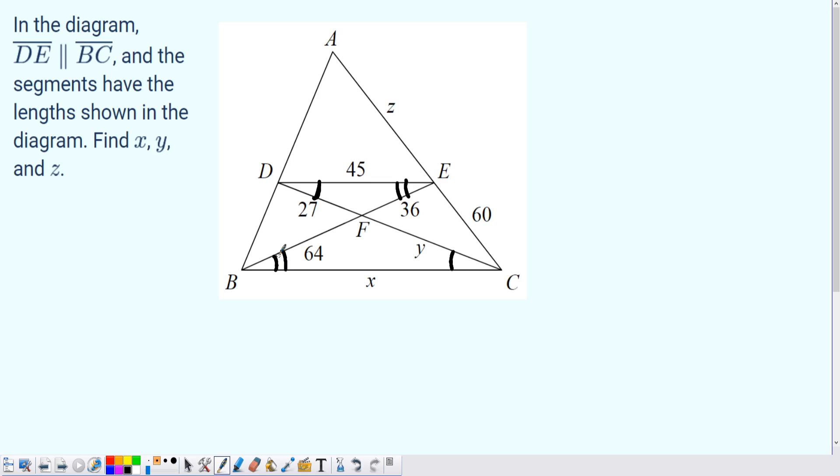Which means we have two similar triangles. We have triangle DEF, which is similar to triangle CBF. Now we can write a couple ratios out, and the reason I'm picking these two triangles in particular is because we immediately found they're similar, and they have the side lengths that we need to eventually find x and y.